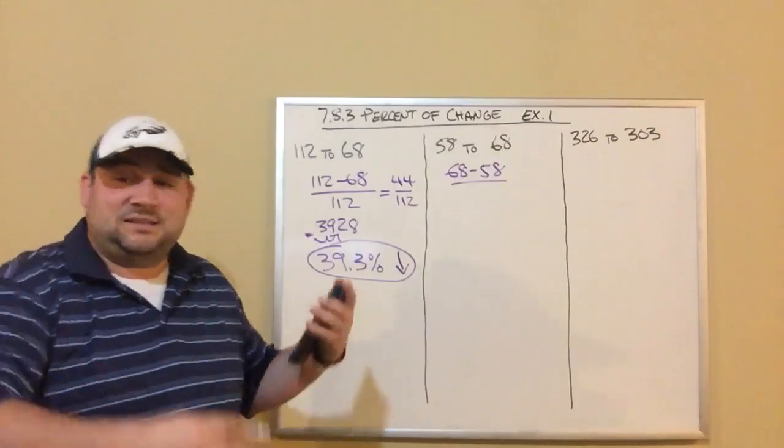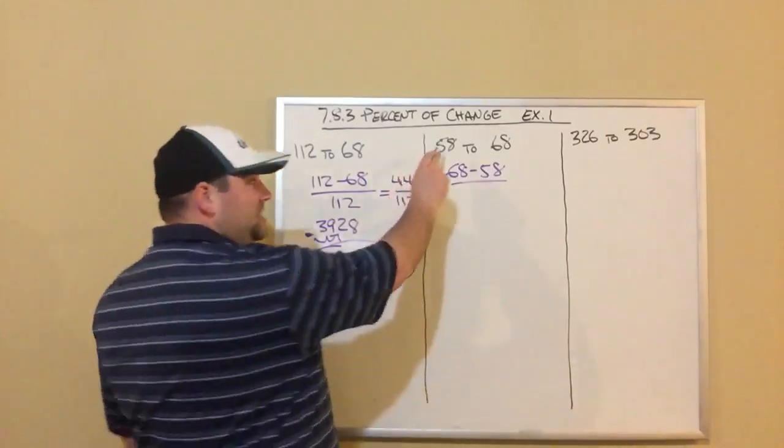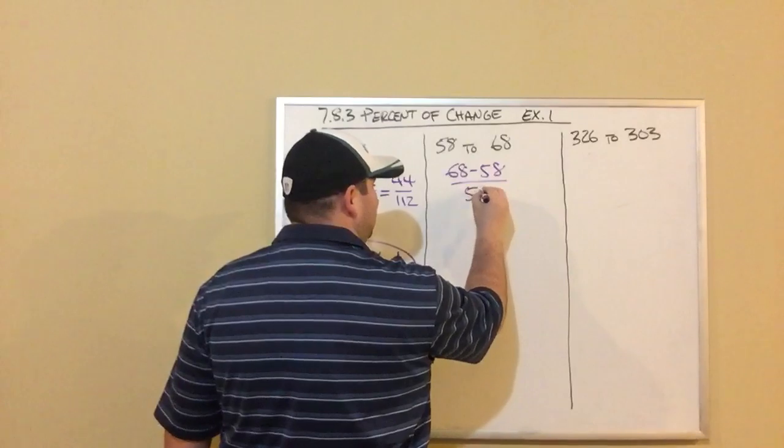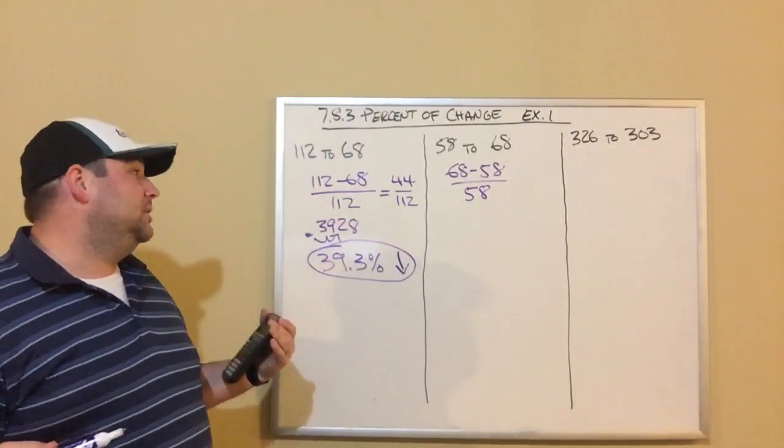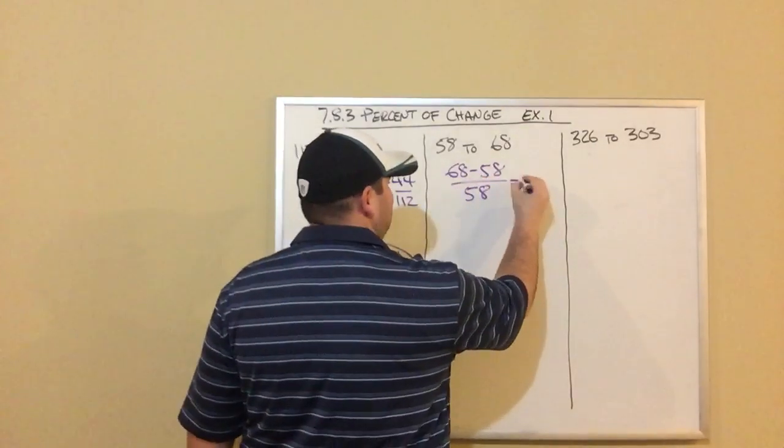But then it's over the original amount. The original amount is not necessarily the bigger or smaller number. It's the number you started with. We started with 58. So 58 is on the bottom. It is the original amount. So now we just do this. 68 minus 58 is 10.